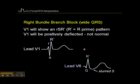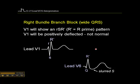The other criteria I should mention is that the S wave has to come down to the baseline or below. For example, if the S wave doesn't come down to the baseline in V1, then that would be an incomplete right bundle branch block. So it has to come down to the baseline or below for a complete RBBB.